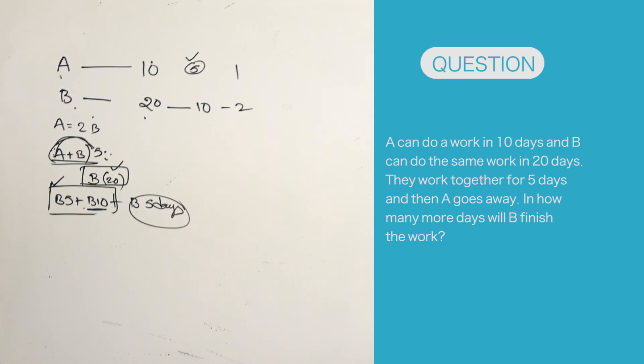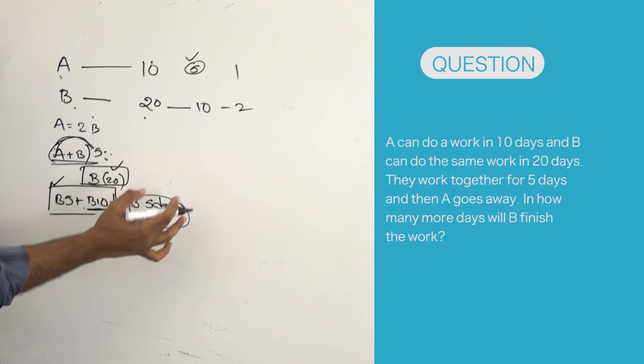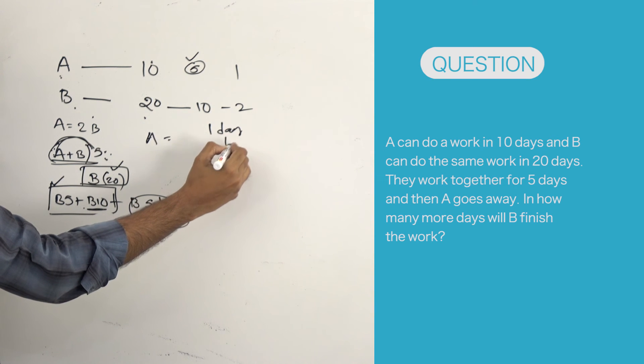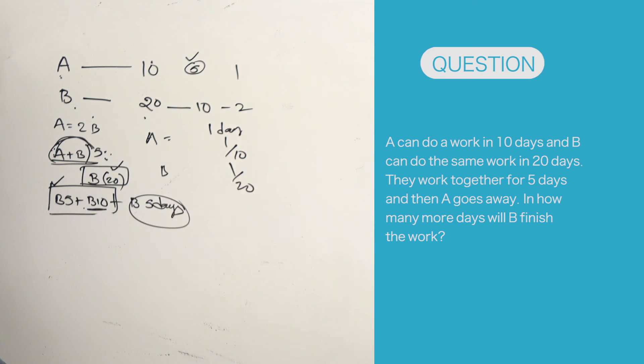This is how using common sense sometimes we can answer the questions faster. Many of us, the moment we see any time and work question, we have the habit of writing A's one day work is 1 by 10, B's one day work is 1 by 20.